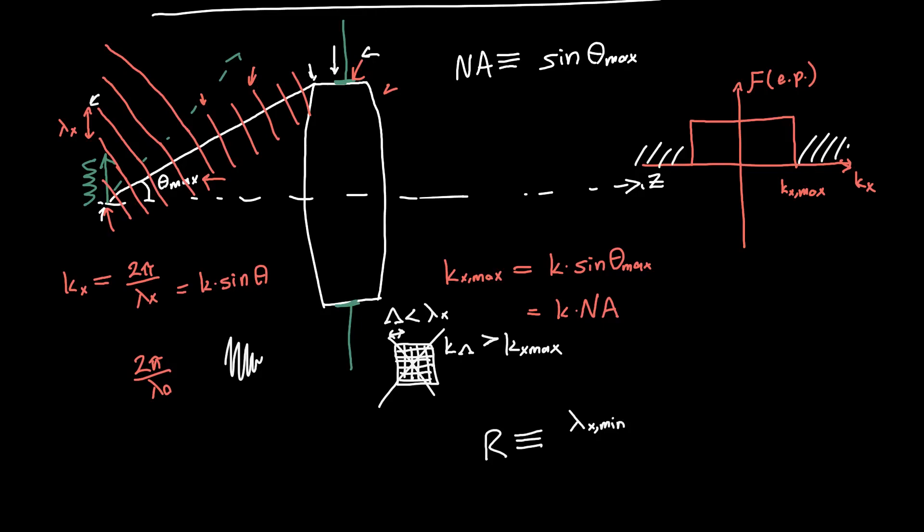And so if you just plug stuff in, λx max is just 2π over kx max, or λx min which is 2π over (2π over λ₀ times our numerical aperture). So 2π's cancel, λ₀ comes upstairs, and you'll get that the resolution is just λ₀ divided by our numerical aperture.